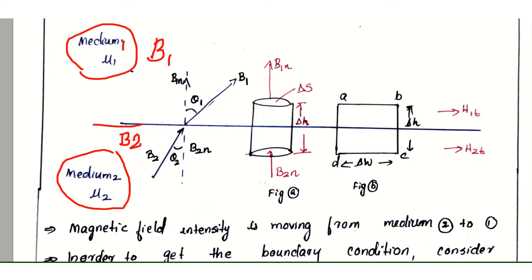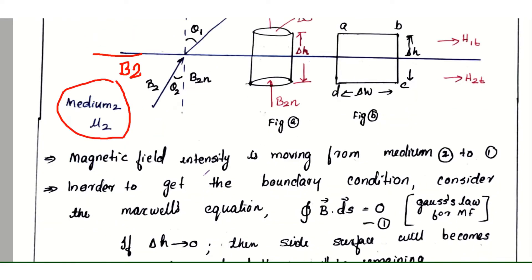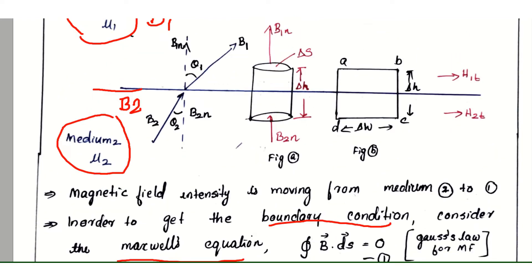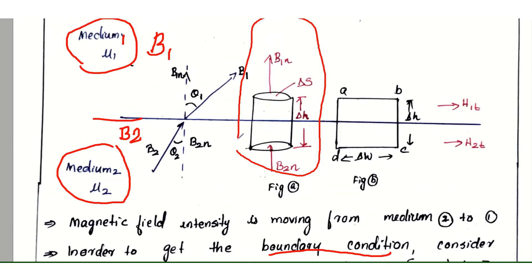This is the cylinder with height Δh. This is the normal component B₂ₙ, this is the normal component B₁ₙ. Region 1 has normal component B₁ₙ, region 2 has B₂ₙ.